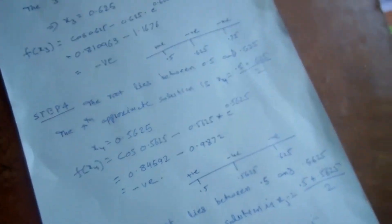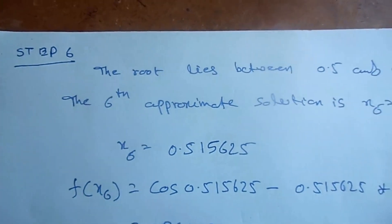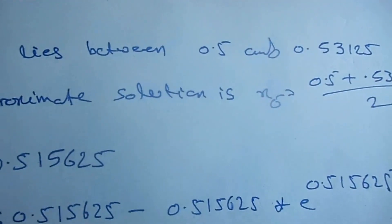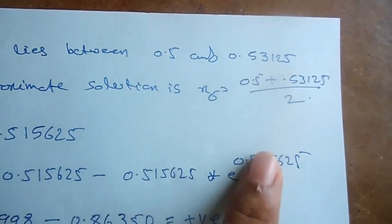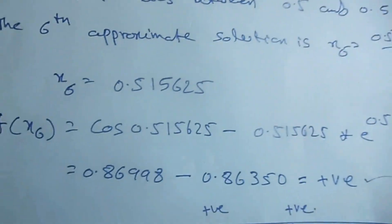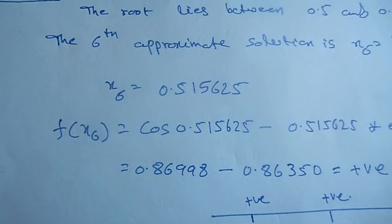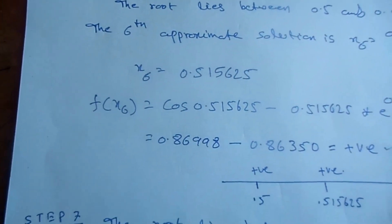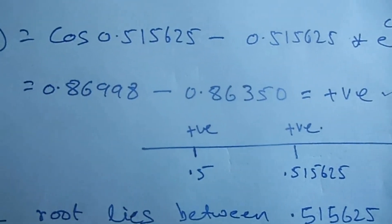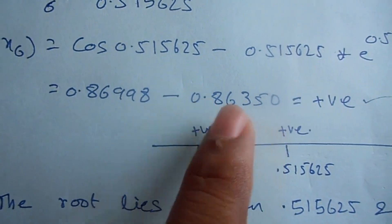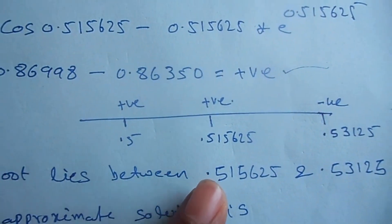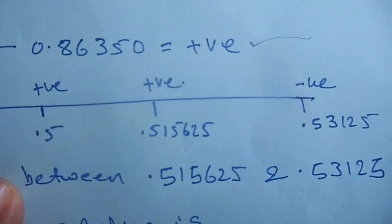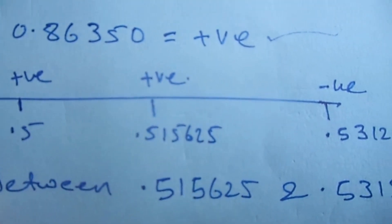Step 6: the root lies between 0.5 and 0.53125. The sixth approximate solution is x6 = (0.5 + 0.53125) / 2 = 0.515625. f(x6) = cos(x6) minus x6·e^x6, which is a positive value — approximately 0.869 minus 0.863, positive in the third decimal place. At x=0.5 it is positive, at x=0.53125 it is negative, and at the midpoint it is positive. So the root lies between 0.515625 and 0.53125.